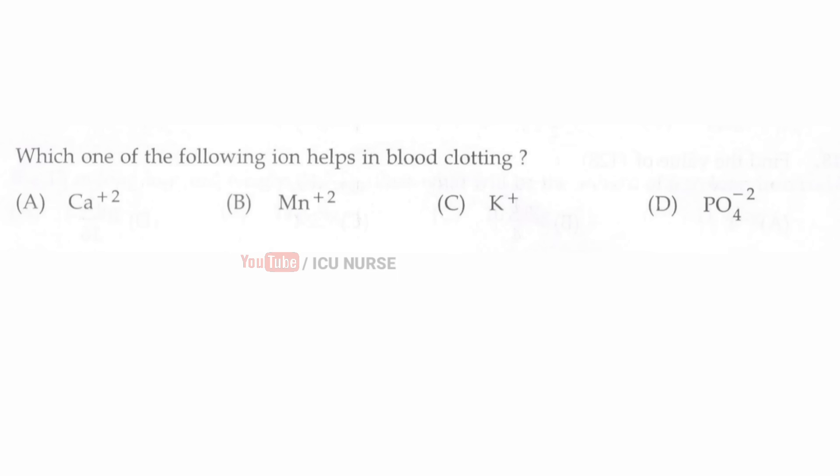Which one of the following ions helps in blood clotting? The correct answer is A, calcium. Calcium ions help in blood clotting.